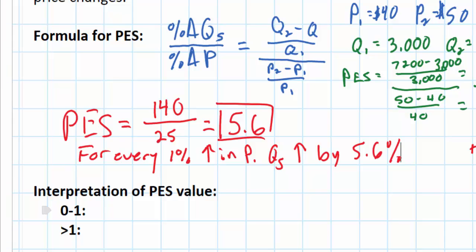Whenever you calculate price elasticity of supply, you're going to get a positive number. This tells us that there is a positive relationship between a good's price and the quantity that producers are willing and able to supply. The possible values you end up with for price elasticity of supply tell you whether the supply of a good is relatively elastic or relatively inelastic.